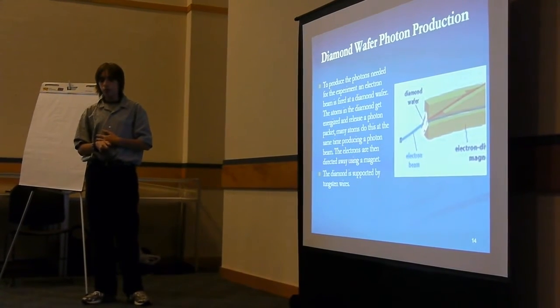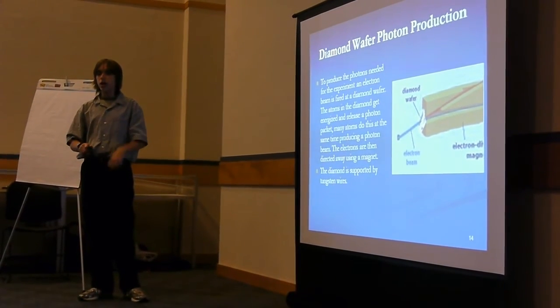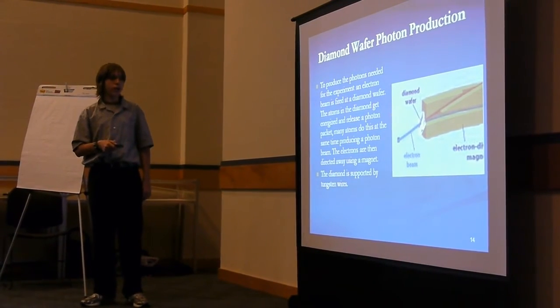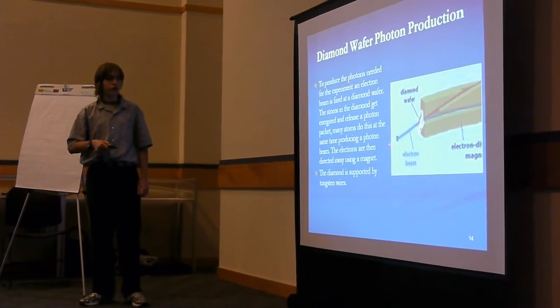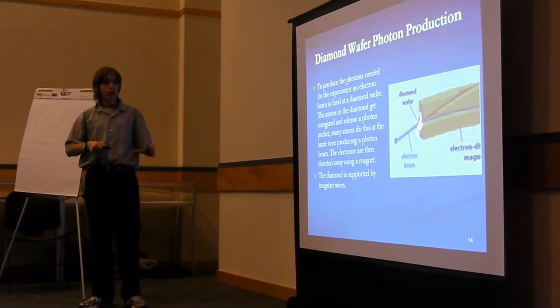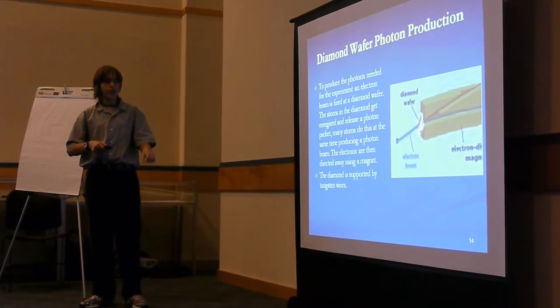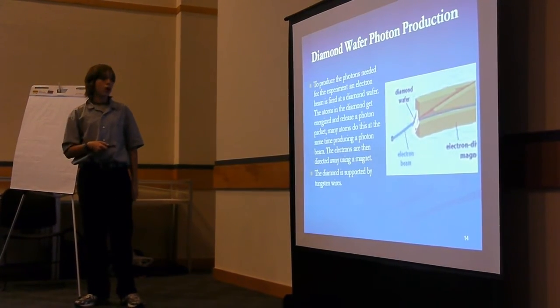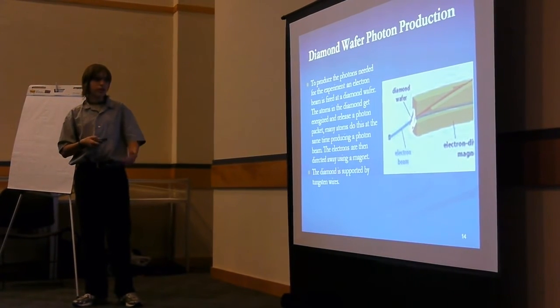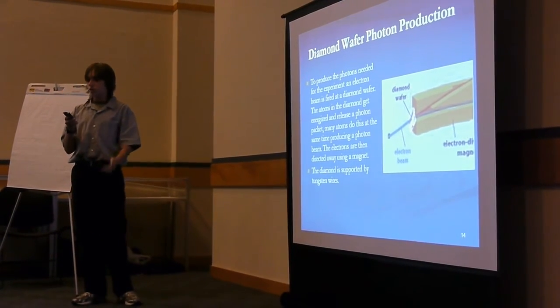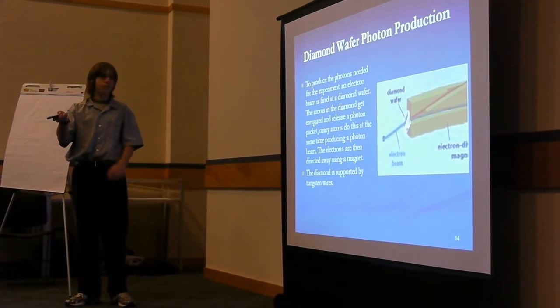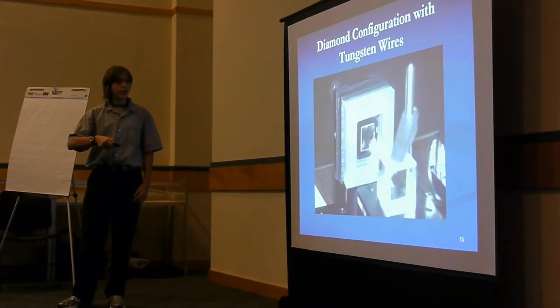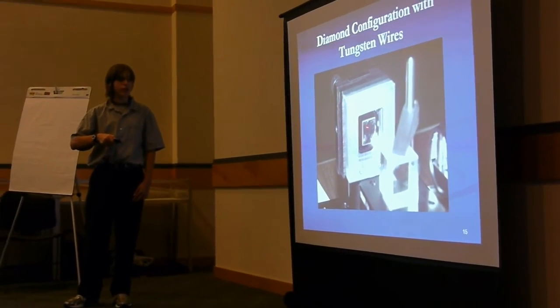Now the part that we primarily worked with this week is the diamond wafer area. We have a diamond wafer here, and electrons pass through this diamond wafer. And the violence within the diamond wafer creates photons. They zoom out of the diamond wafer at the speed of light. Many do this, and it creates a beam. And the diamond is also supported by some wires. As you can see here,